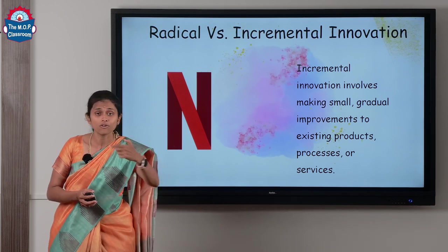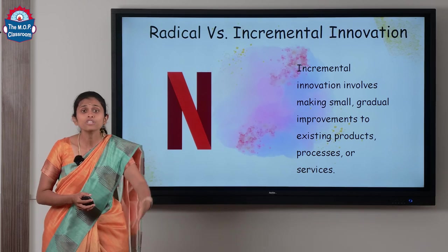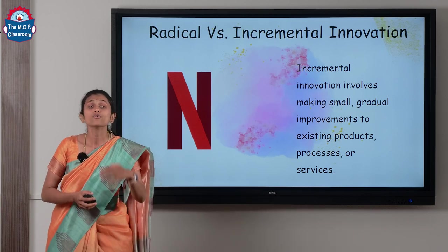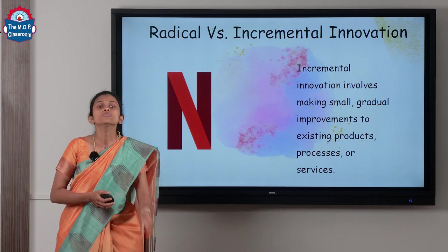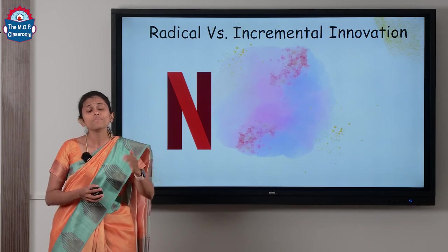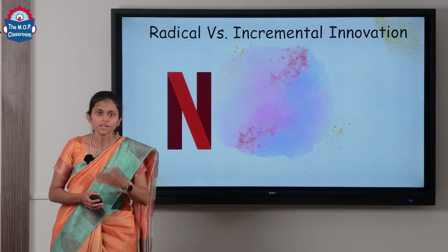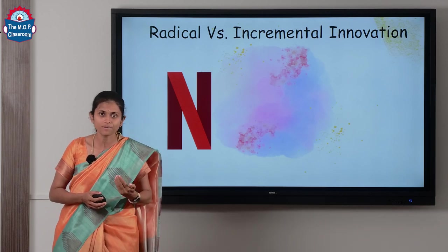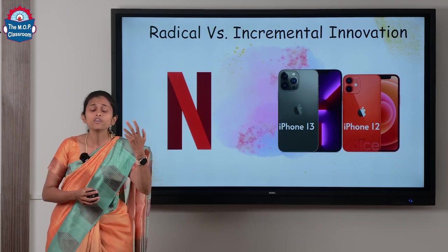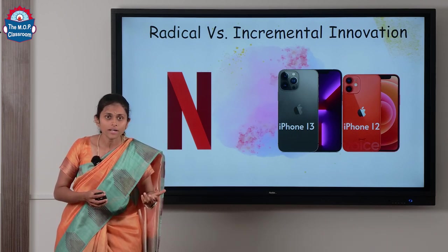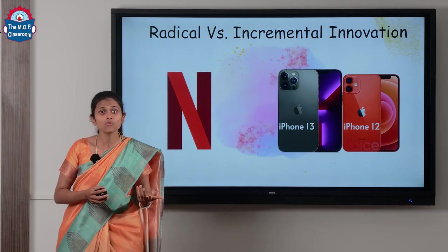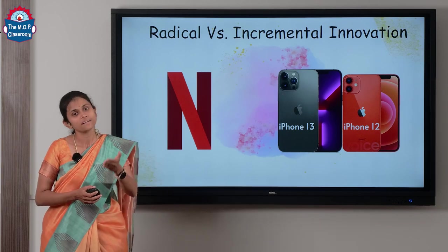Rather than going to the theatre to check movies, people started subscribing to the OTT platform so that within a month or so they could watch movies on Netflix. That is the kind of radical impact that a radical innovation can have. The other type is incremental innovation — rather than a disruptive innovation, you have a stage-by-stage evolution of a product. The example is the Apple iPhone series: iPhone 10, 11, 12, 13 — there is a minimal change with each version, such as face recognition, fingerprint, or better camera quality. These are examples of incremental innovation.